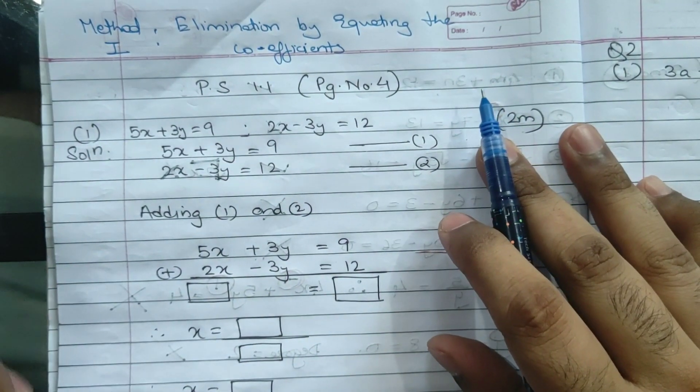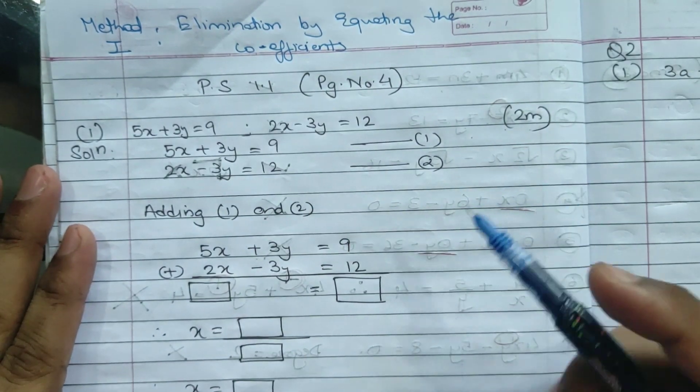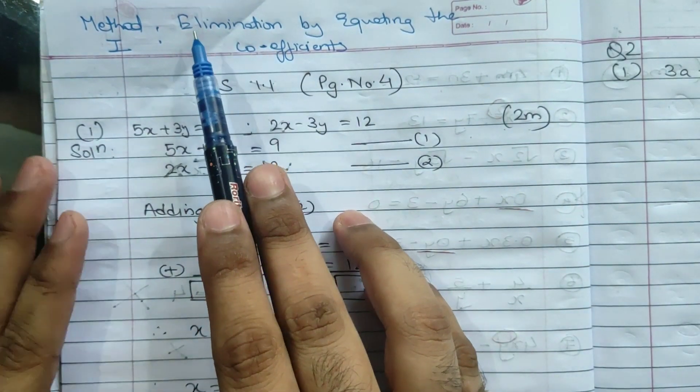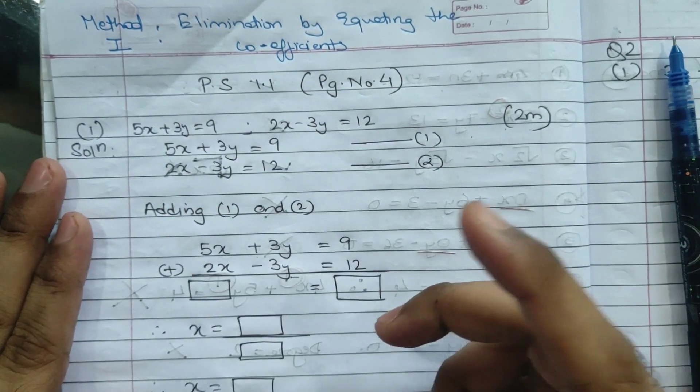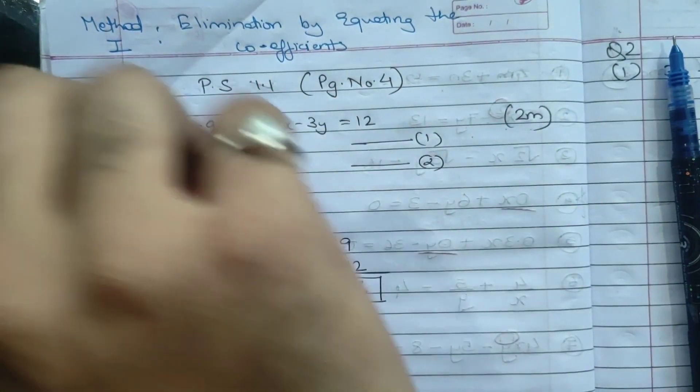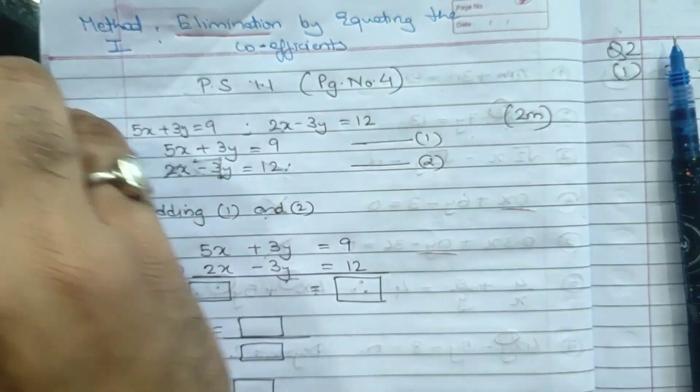It basically deals with our method 1, which is known as the elimination by equating the coefficient. So before we start with the sum, let us first understand elimination by equating the coefficient.